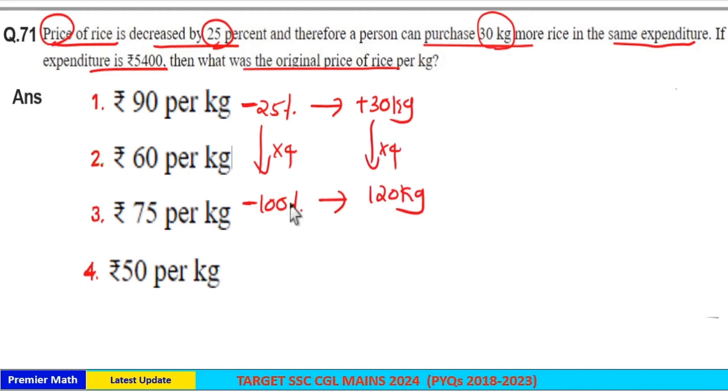Now this 100% we derived from the 25% reduced price, which means this 100% is the reduced price or new price. So at new price, we will get 120 kg.